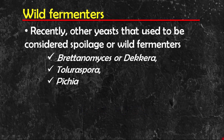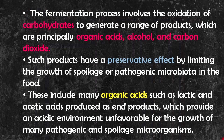Recently, other yeasts that used to be considered spoilage or wild fermenters — such as Kera, Torulaspora, and Pichia — have begun to be used purposely in food fermentation. The fermentation process involves the oxidation of carbohydrates to generate a range of products, which are principally organic acids, alcohol, and carbon dioxide. Such products have a preservative effect by limiting the growth of spoilage or pathogenic microbiota in the food, including through organic acids such as lactic and acetic acids, which provide an acidic environment unfavourable for growth of many pathogenic and spoilage microorganisms.